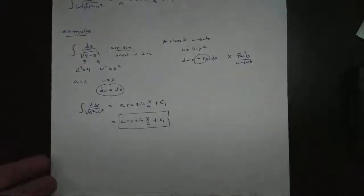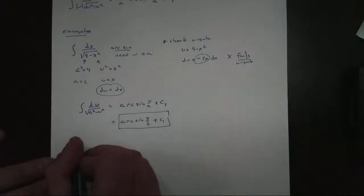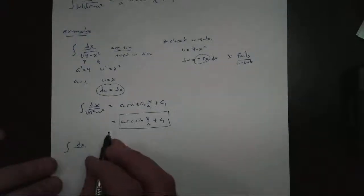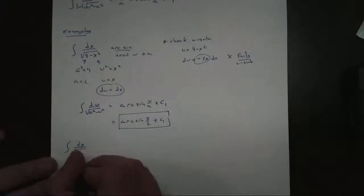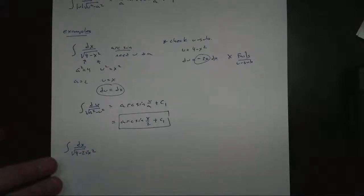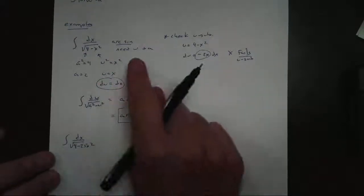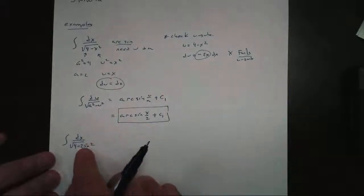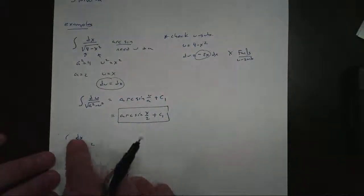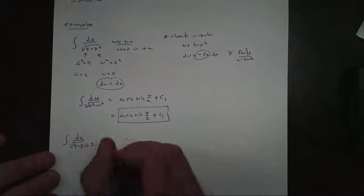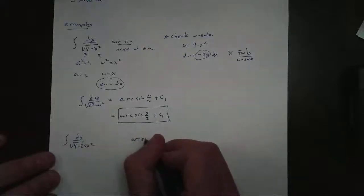And we can take a look at another one here real quickly, just to kind of show you how quickly these really kind of go. Let's try this one: the antiderivative of dx over 4 minus 25x squared. Now again, I know u substitution is not going to work, because if I take the derivative of the inside, I get 25x. The x isn't going to cancel. So this is again my arc sine function.